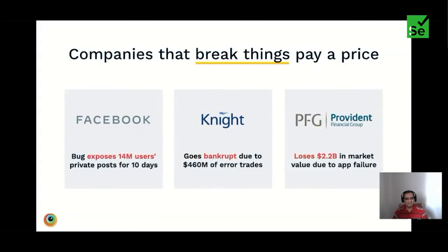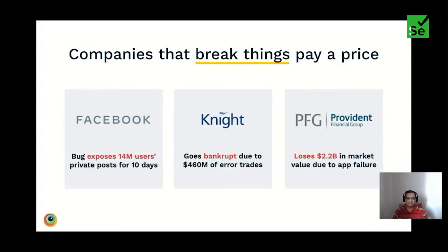In 2012, Knight Capital was the largest trader in U.S. equities, trading over 21 billion dollars every day. Then a deployment error fired off automatic trades by mistake — it went on without stopping and there was no kill switch. After 45 minutes they managed to stop it, but the firm had lost 460 million dollars, exceeding their assets, and they went bankrupt. These countless examples of poor quality have one takeaway: bugs on production are bad for business. Each of these failures could have been prevented with the right mechanisms in place.